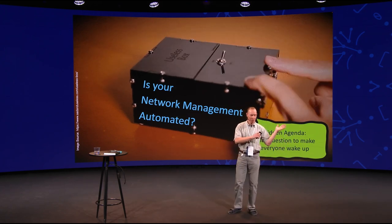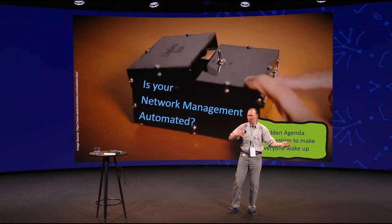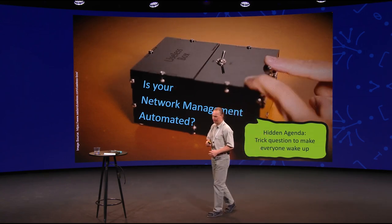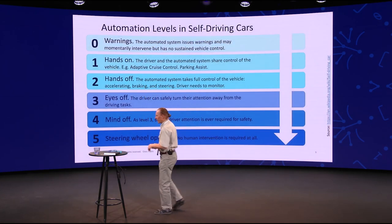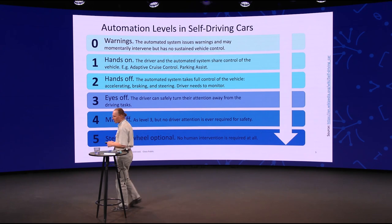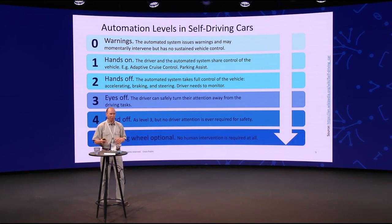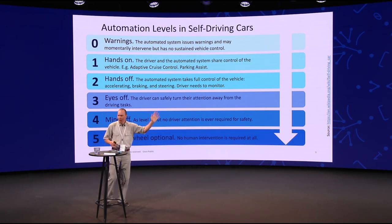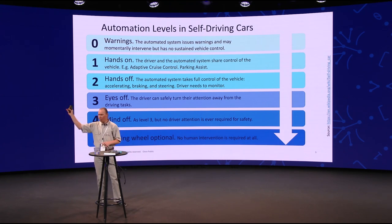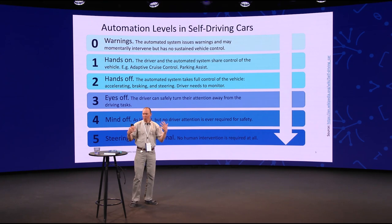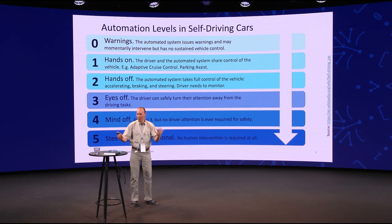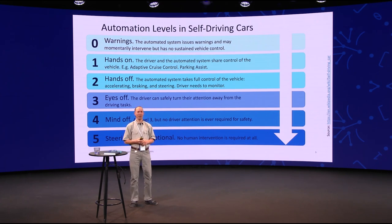There is a whole scale, a whole range from being a little bit automated to something that's very, very automated. In the car industry, they had a similar problem when they were introducing automation — self-driving cars. They couldn't really talk about it because there was no terminology, no concept. What do you mean by automation? And we have the similar story here in network automation.